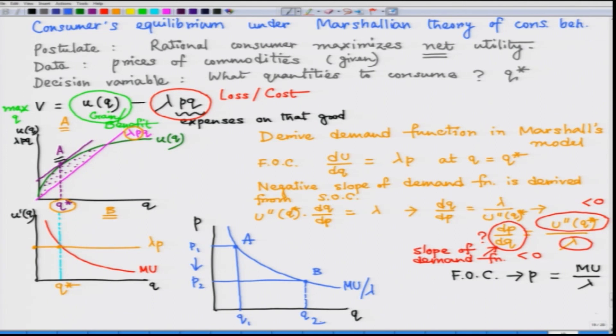We obtain another point B as the consumer's equilibrium on the MU over lambda curve. Let me denote the first position of equilibrium as point A. As per point B we can see that as price has fallen the consumer has demanded for a higher level of Q, Q2 star, so that he or she maximizes his or her utility or net utility. Marshall assumes lambda equal to 1. If that is the case then the marginal utility curve becomes demand function.